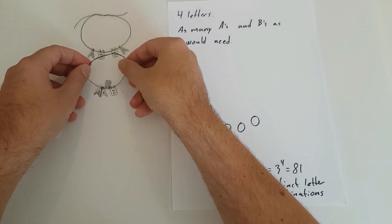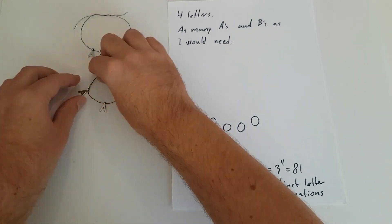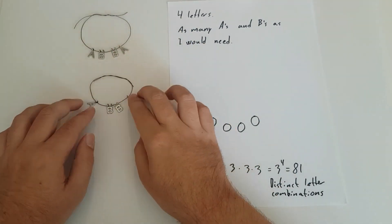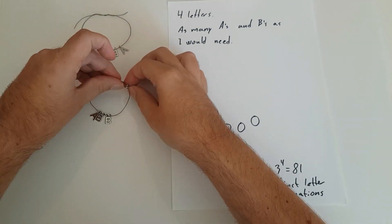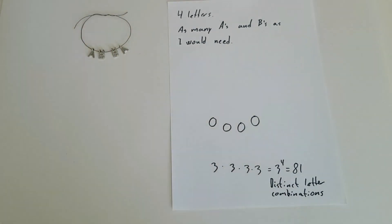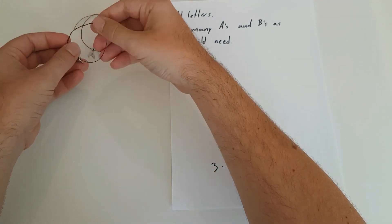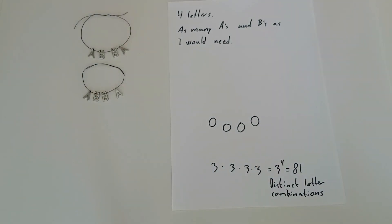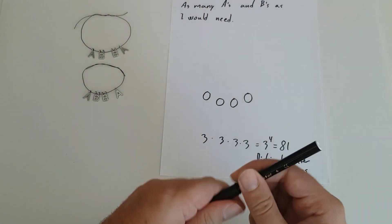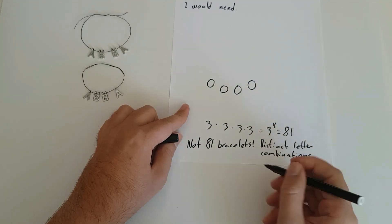Here is one, here is another — and wait a minute, these are the same bracelet. I just moved a letter over from one side to the other. And this one here is the same bracelet as well — I just flip it over. So there aren't 81 bracelets, as there are multiple letter combinations that yield each one.